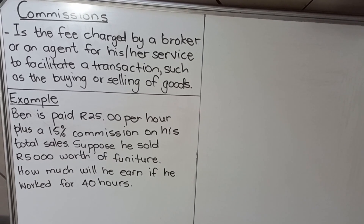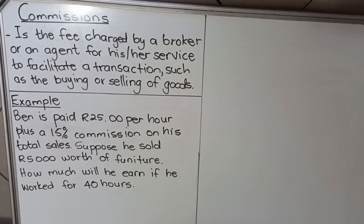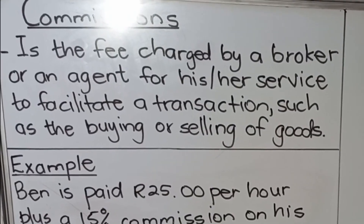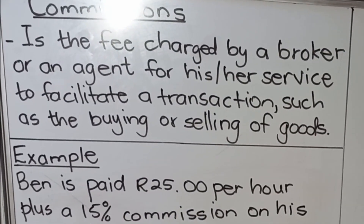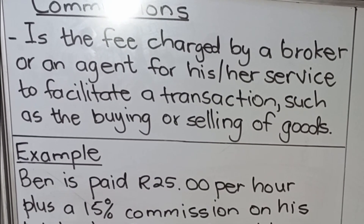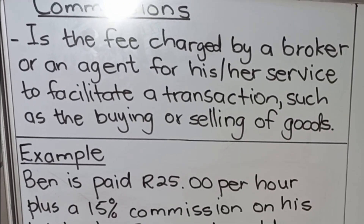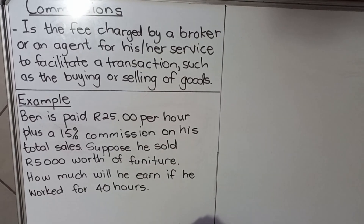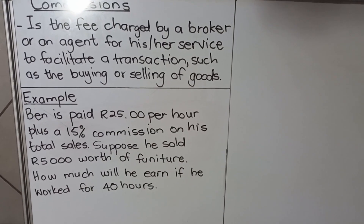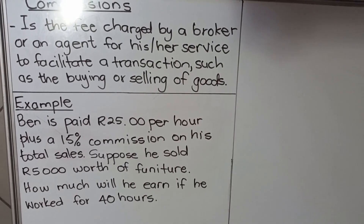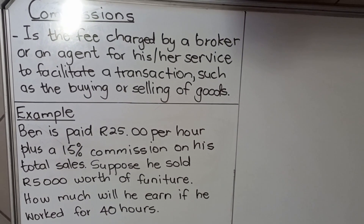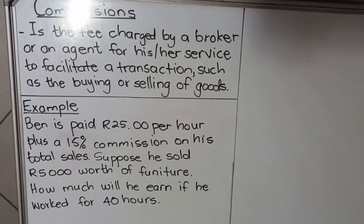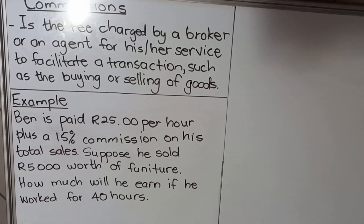Hello everyone, this is a video on commission. I'm going to show you how you complete commission, but we'll start with a definition. Commission is a fee charged by a broker or an agent for his or her service to facilitate a transaction, such as the buying or selling of goods. So commission is what somebody earns when they sell something — maybe a house — they get an amount because they've sold something. I'm going to use an example to show you how you calculate commission.